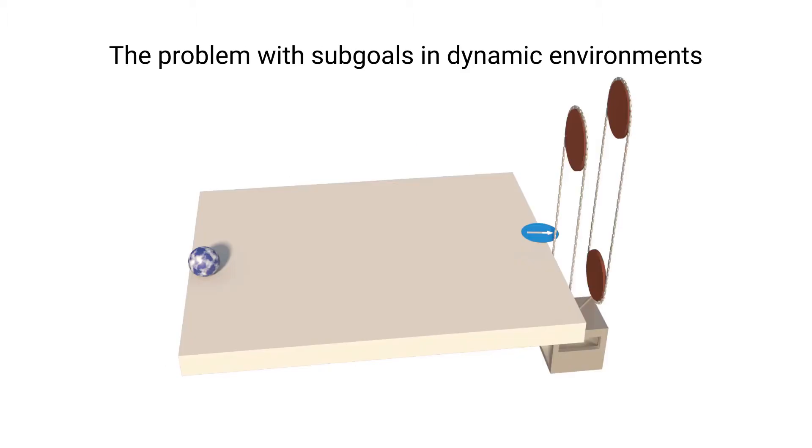Let's consider this example environment to illustrate a problem that arises when using subgoals in dynamic environments. In order to progress in this task, the agent has to steer a marble into a continuously moving elevator.